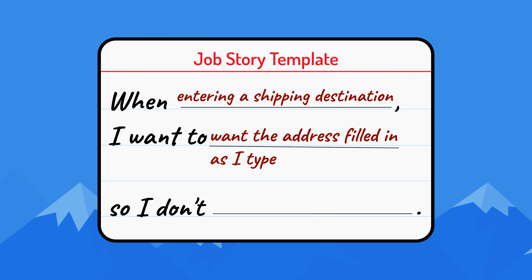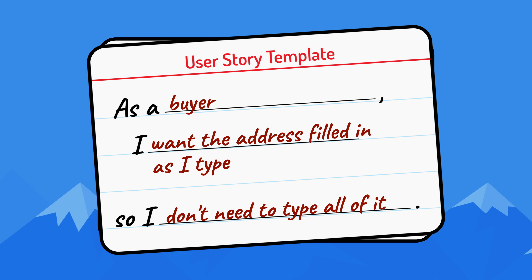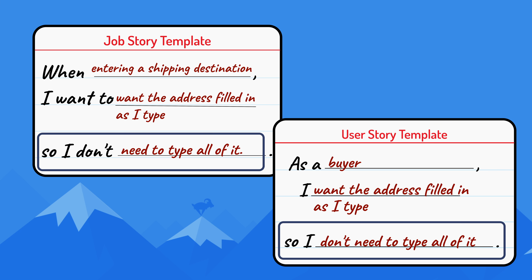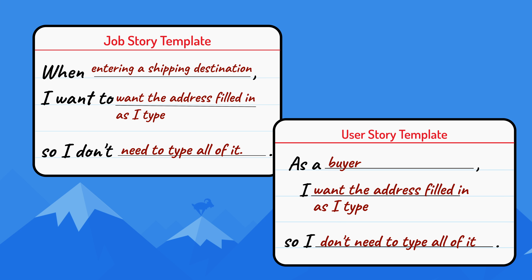Next, let's look at entering the shipping destination when placing an order online. The job story version is: when entering a shipping destination, I want the address filled in as I type, so I don't need to type all of it. A user story version would be: as a buyer, I want the address filled in as I type, so I don't need to type all of it. These two stories highlight the difference that exists in the first part of the template — the 'when' and 'as a' clauses differ, but the remainder is identical. The job story is better here because of the additional context it provides around when the story is performed. Who is performing the action is not important, which is why the user story got written with the generic 'as a user.'